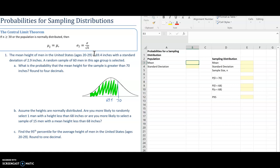So let's look at our example. The mean height of men in the United States, ages 20 to 29, is 69.4 inches with a standard deviation of 2.9. So from that, I know my mean is 69.4, and the standard deviation is 2.9 for the population.